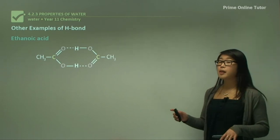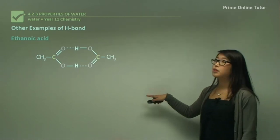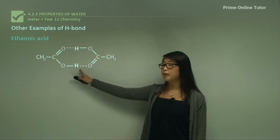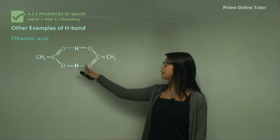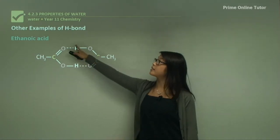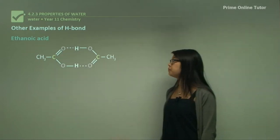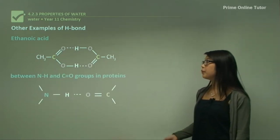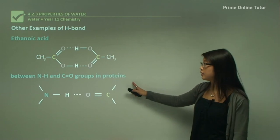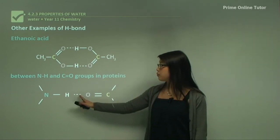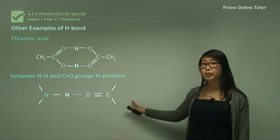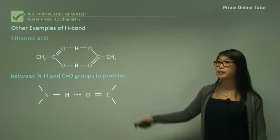We also have other examples of hydrogen bonds, such as in ethanoic acid — the hydrogen here is attracted to the negative oxygen, and similarly on the other side. We also have hydrogen bonding in N–H and C=O bonds, and these tend to be really common in proteins.